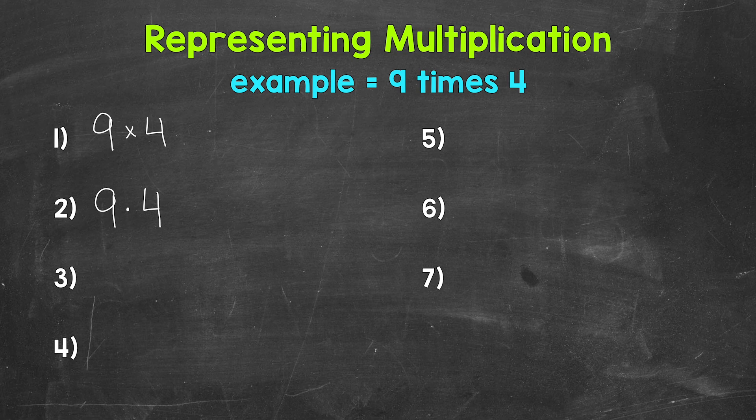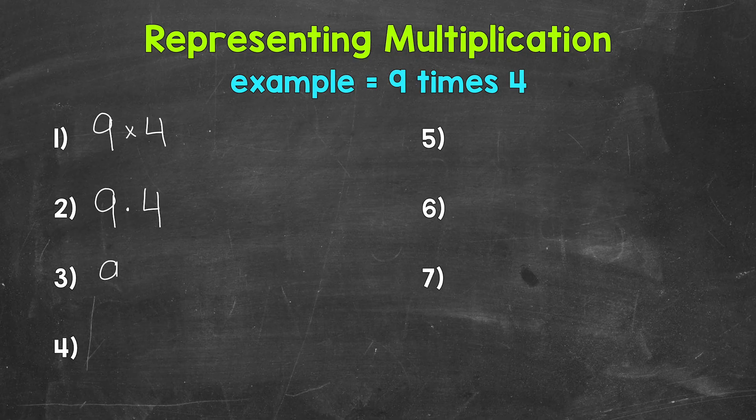Up next, we have the use of one set of parentheses. So nine times four. So we have that first factor or number we are multiplying right next to a set of parentheses that contains the next factor or number we are multiplying. A number right next to a set of parentheses means we are multiplying.